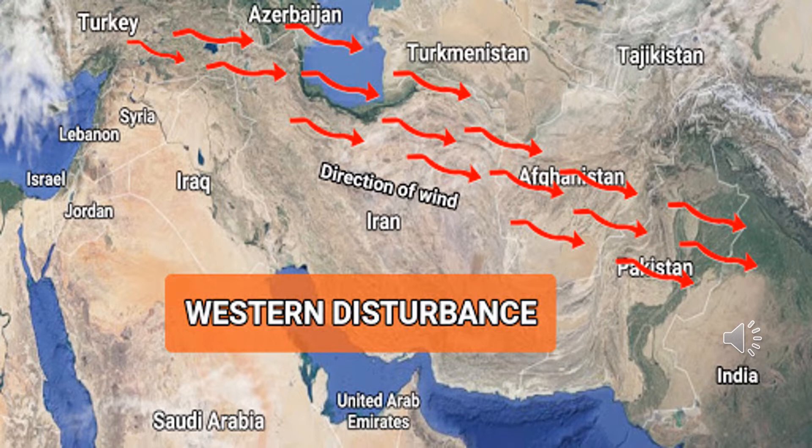These winds are important for the development of the Rabi crop, which is the crop sown during the winter season. Western disturbance is important as it brings rainfall in the winter season when the monsoon is not adding water to the water bodies of Pakistan. However, at times it causes flooding conditions in the northern parts and Balochistan.